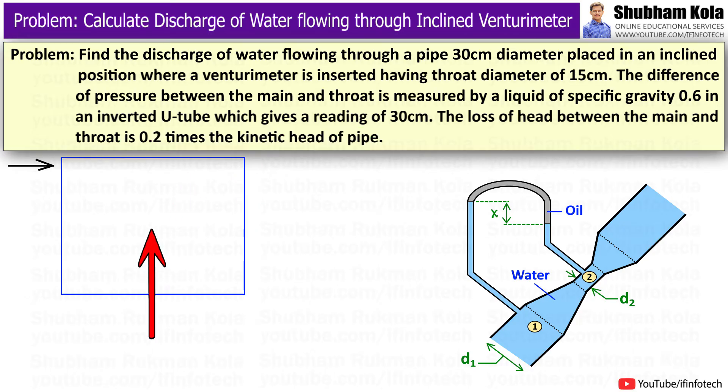To solve this problem, first I will write down the given data. The diameter of pipe d1 is 30 cm, equal to 0.3 m, and the throat diameter d2 is 15 cm, equal to 0.15 m.